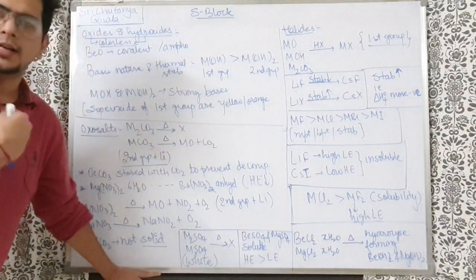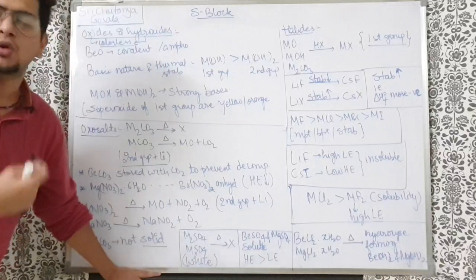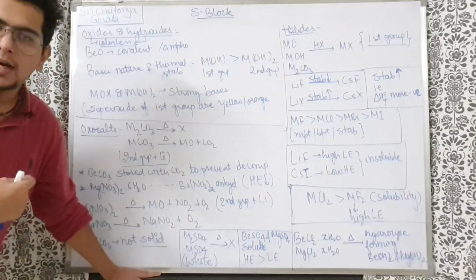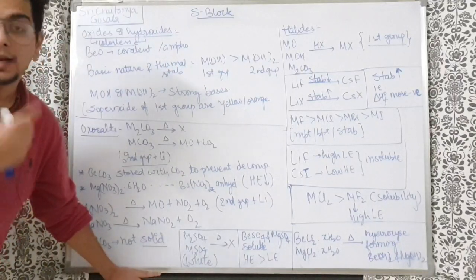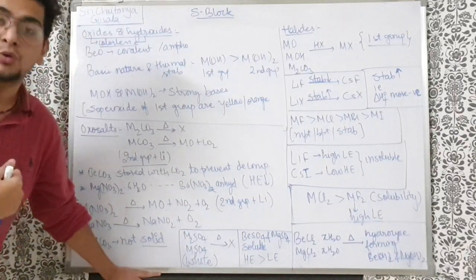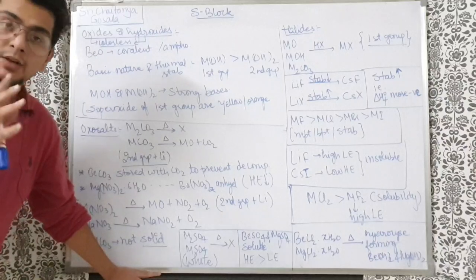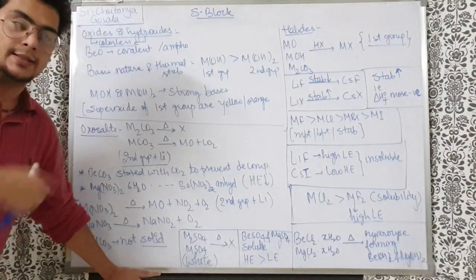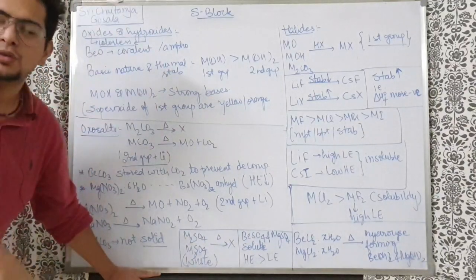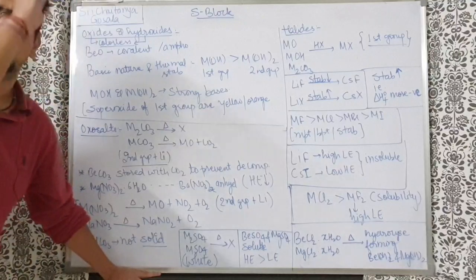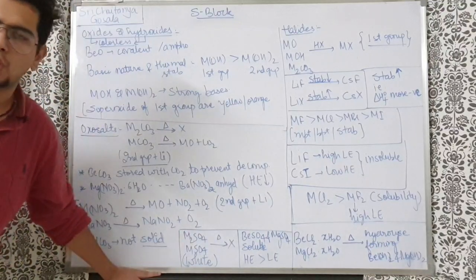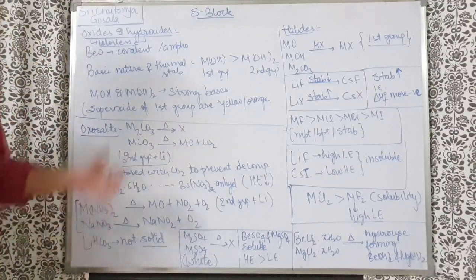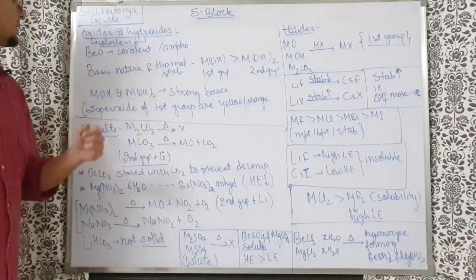If the anion gives the color, then the salt can be colored — like K2Cr2O7 or KMnO4. But when both the cation and anion are colorless, as in this case, the salt will clearly be colorless or white in color. So, oxides and hydroxides of these groups are colorless.